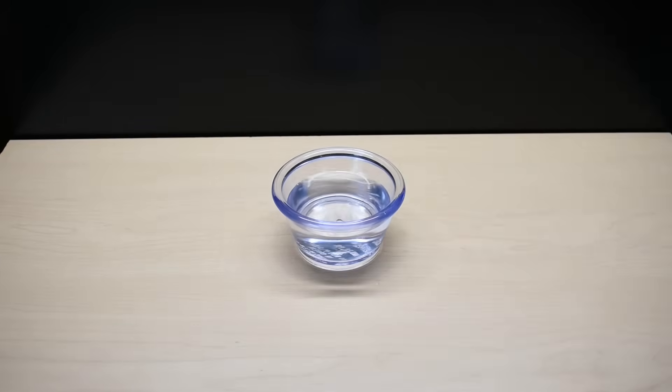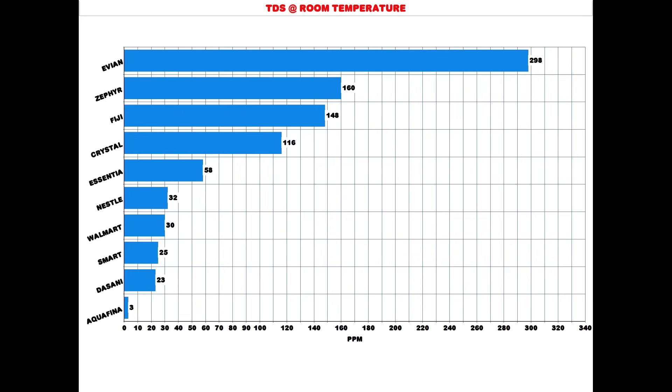Let's take a look at the results. As you can see, the Aquafina came in the lowest at 3 parts per million, and the last one is Evian at 298 parts per million.